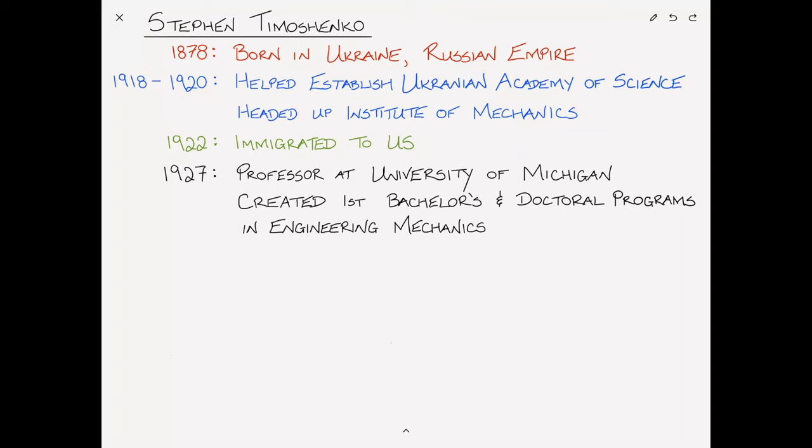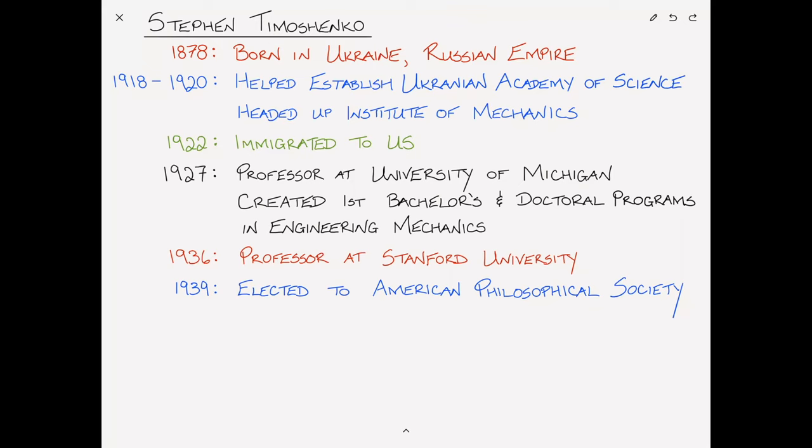where he created the first bachelors and doctoral programs in engineering mechanics. I mean, this was a pretty big deal, right? Many of you watching this, I'm sure, are direct beneficiaries of that. In 1936, he became a professor at Stanford University. In 1939, was elected to the American Philosophical Society. And a year later, in 1940, was elected to the National Academy of Sciences.